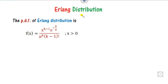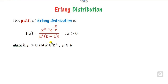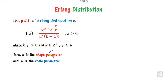As we discussed in our last class, what is the Erlang distribution and what is the probability density function, called the PDF. K and mu are the two unknown parameters, where K is a positive integer greater than 0, and mu is a real number. K is represented as a shape parameter while mu is called the scale parameter.